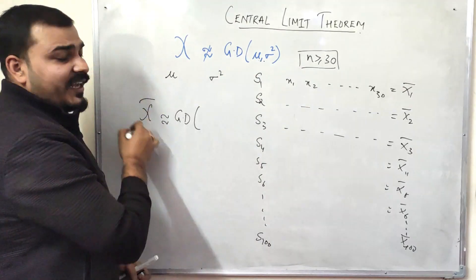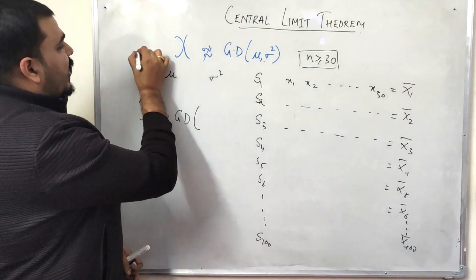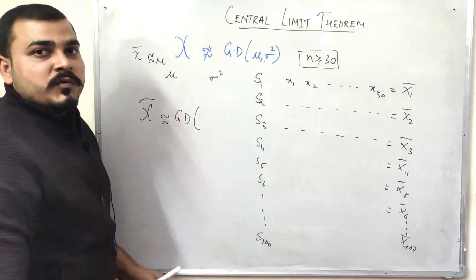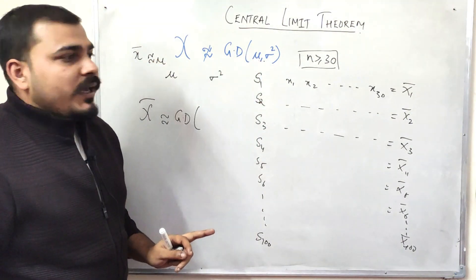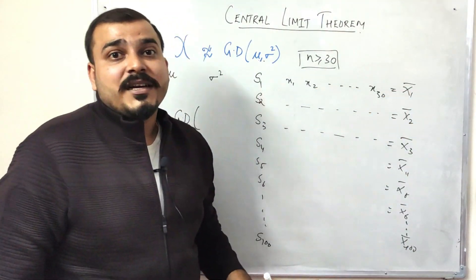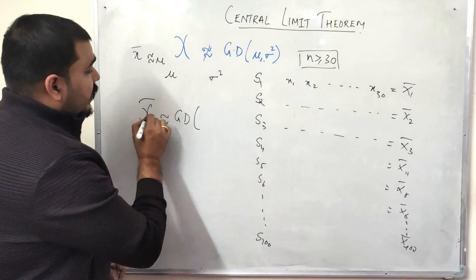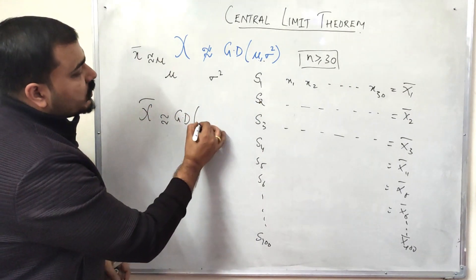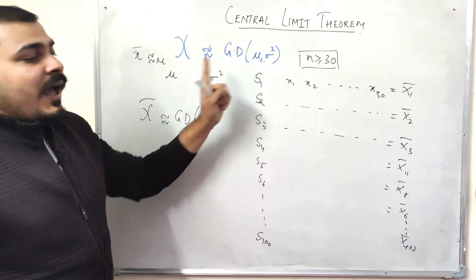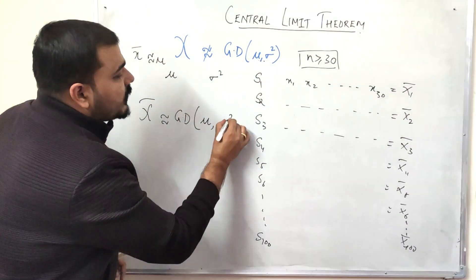So this x̄ will be following a Gaussian distribution with the mean which will be approximately equal to the same mean μ, and my variance will actually be σ²/n. And this is the property that is basically defined by Central Limit Theorem.